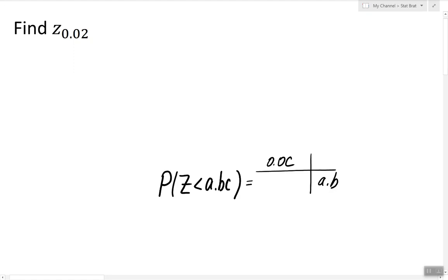So to find the Z alpha for any given alpha, we simply have to look for 1 minus alpha inside the table.